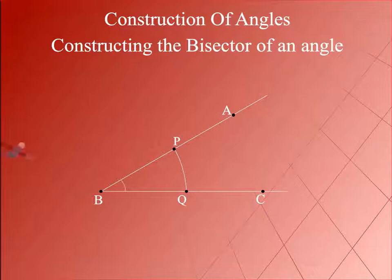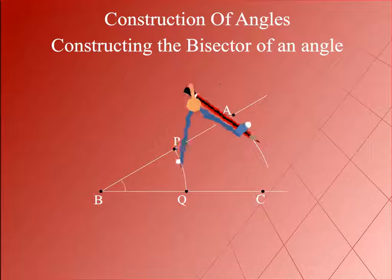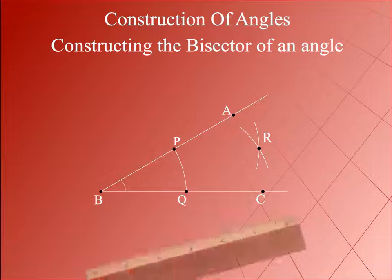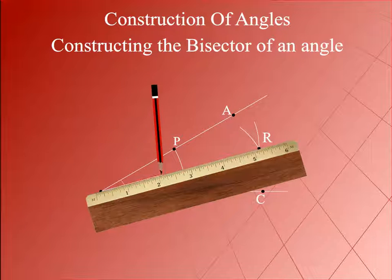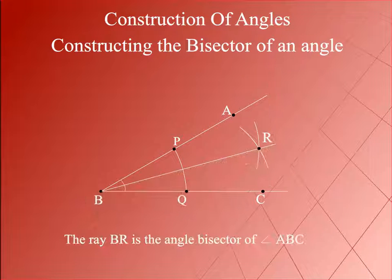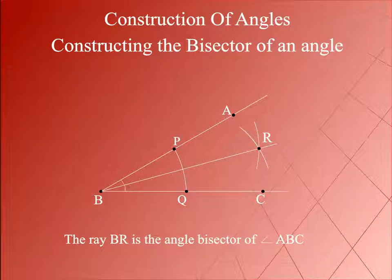With P and Q as centres and radius greater than half PQ, draw two arcs intersecting each other at R. Join BR and produce it to get the ray BR. The ray BR is the angle bisector of angle ABC.